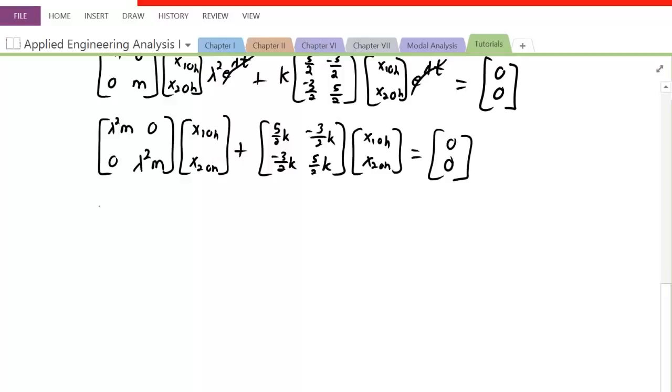So we could do that by adding lambda squared M to this right here, the 5 over 2 K. Actually I'll make this matrix a little bigger. We have lambda squared M plus this matrix over here, 5 over 2 K. And we have a 0, so 0 plus negative 3 over 2 K, which is just negative 3 over 2 K.